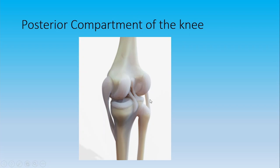These are the ligaments: anterior, medial, and lateral — these are the collateral ligaments. You also have to check if they are not ruptured.